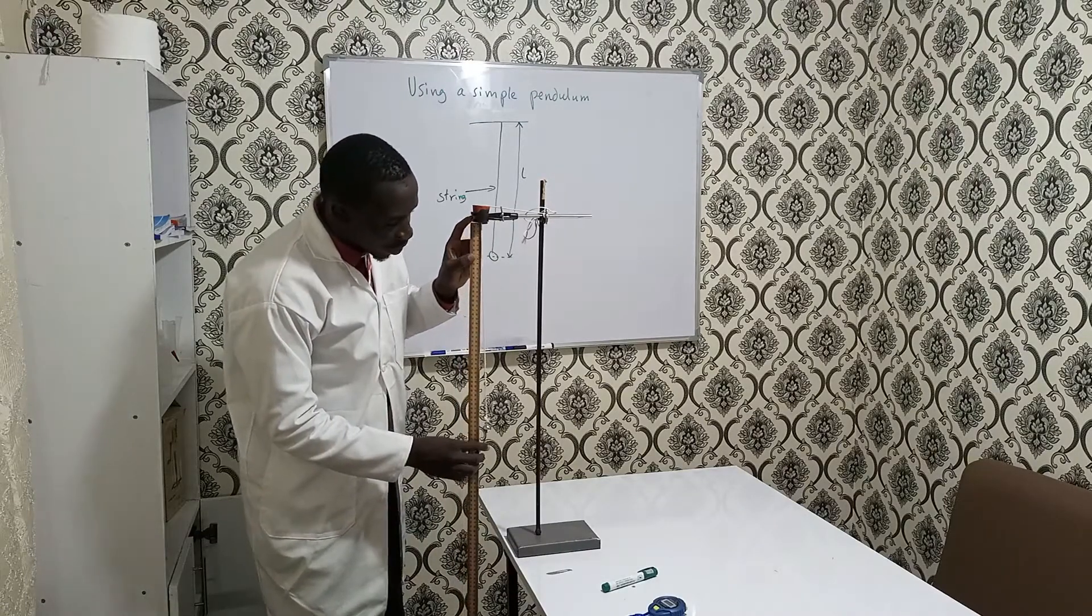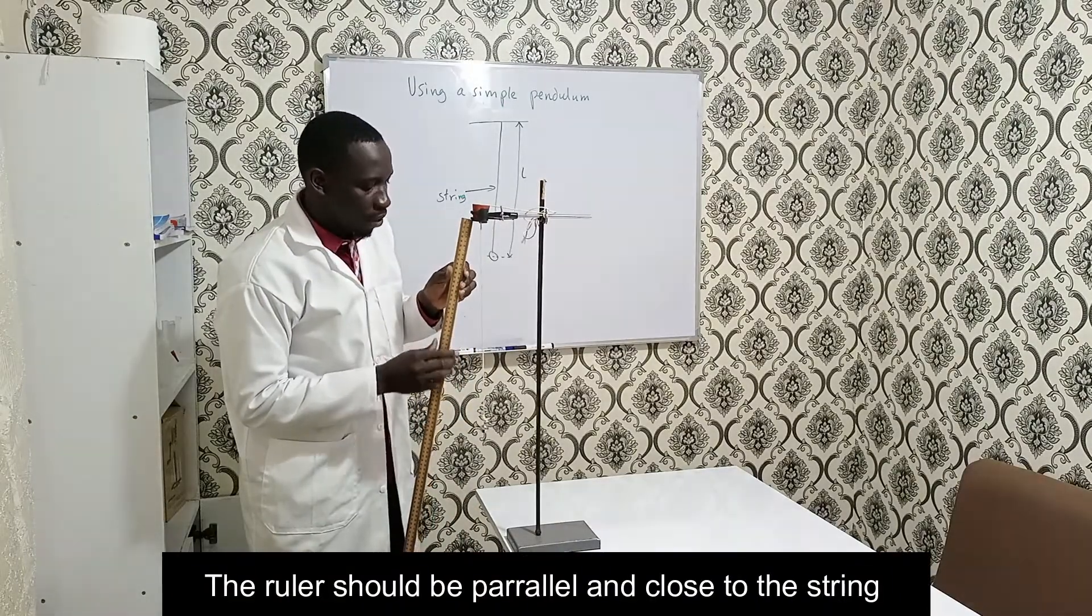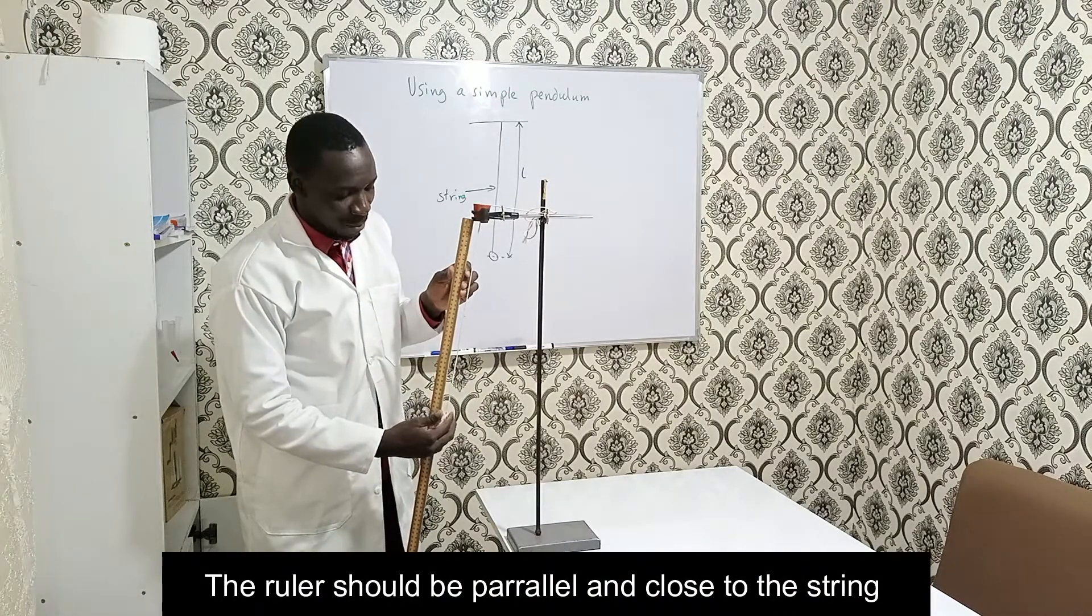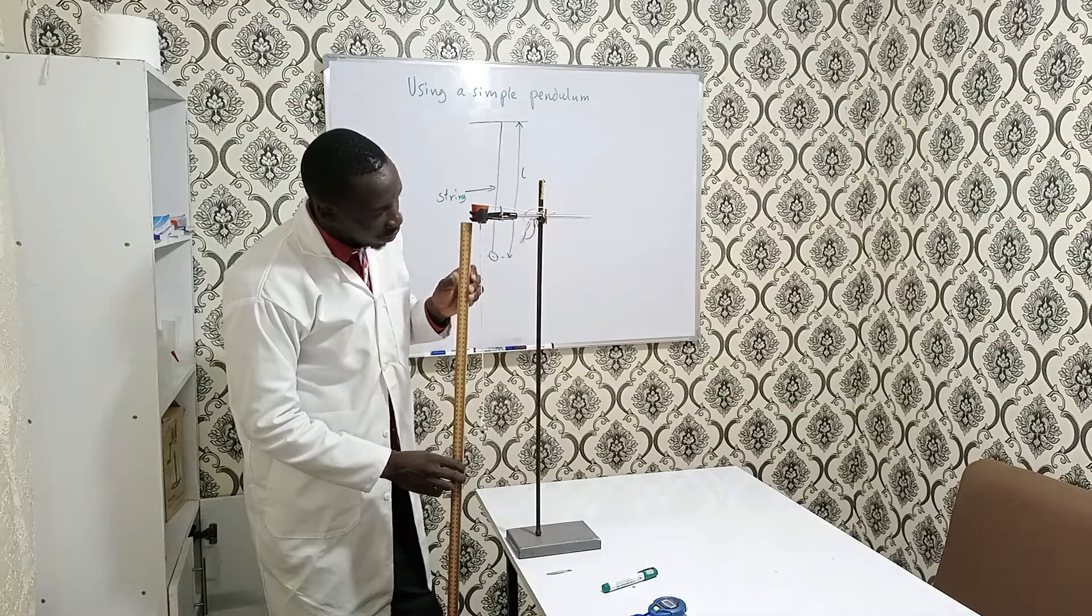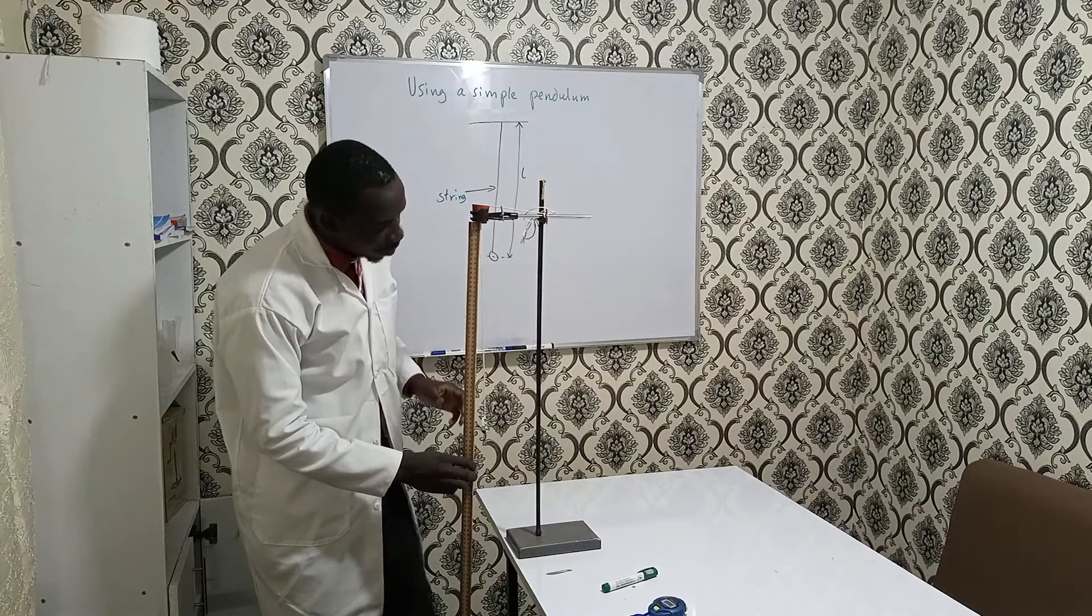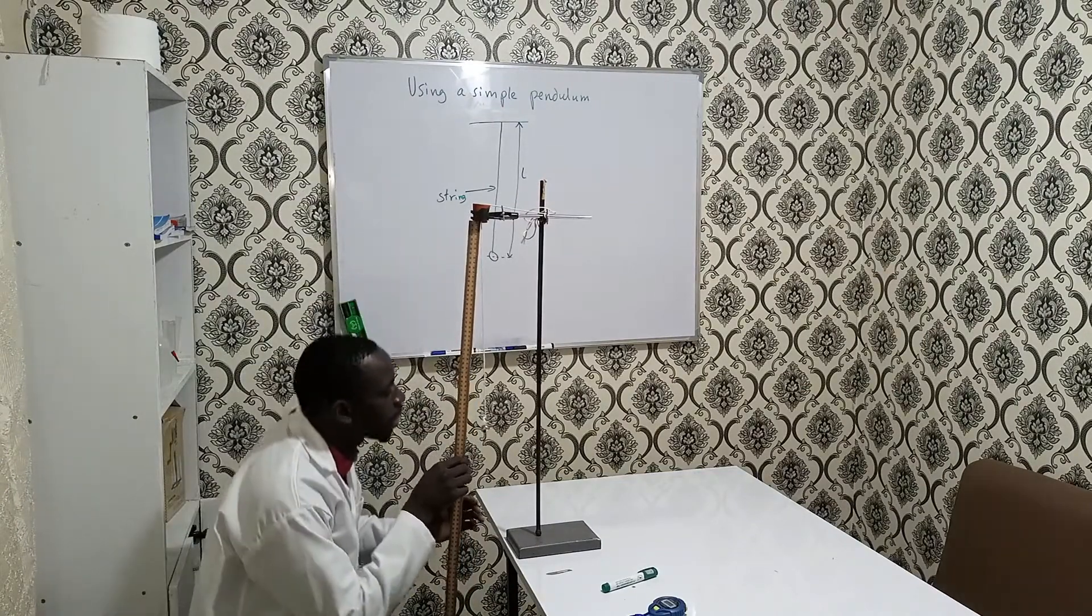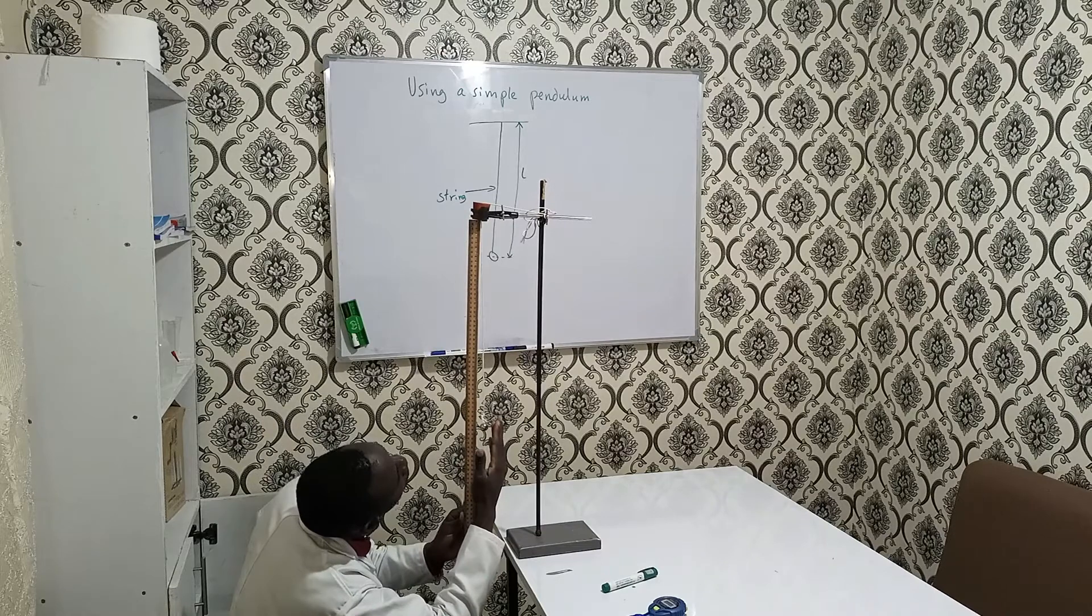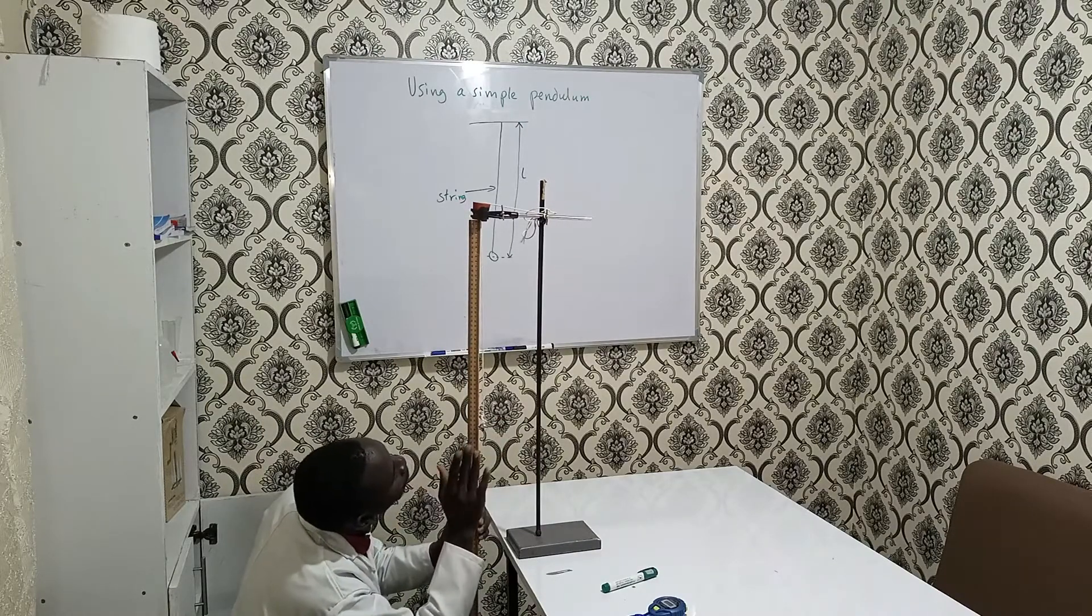Again, I've seen students put the meter here and try to move it this way to take measurement. That is wrong. Remember, this is supposed to be vertical. What you're supposed to do is ensure that your ruler is as close to the string as much as possible to avoid parallax error.